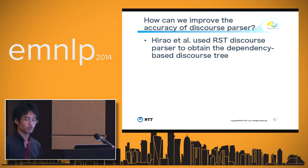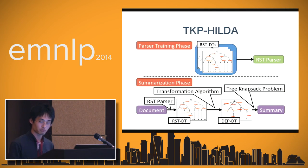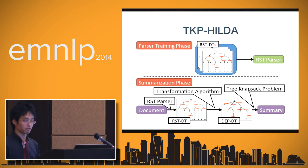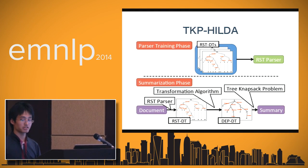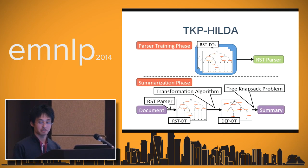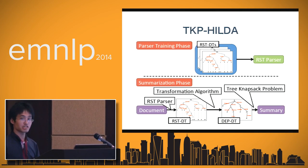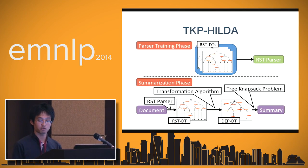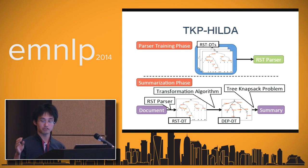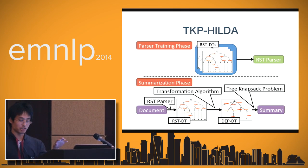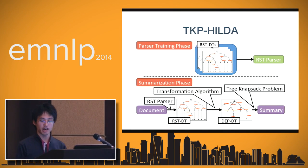So, how can we improve the accuracy of the discourse parser to generate high-quality summaries? To find a way to improve, let's look at Hirao's work in detail. To obtain the DEP-DT, they use the RST parser and a simple transformation algorithm. The system contains mainly two parts: a parser training phase, where we train the RST parser using RST discourse trees; and a summarization phase, where the input document is parsed into RST-DTs, then converted to the DEP-DT via a transformation algorithm, and finally we solve the tree-knapsack problem to obtain the summary.